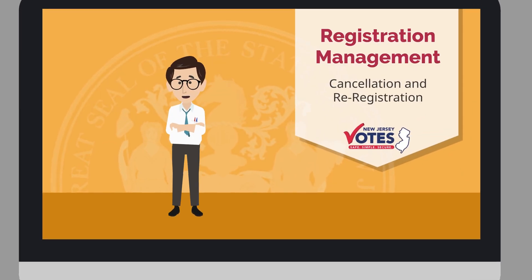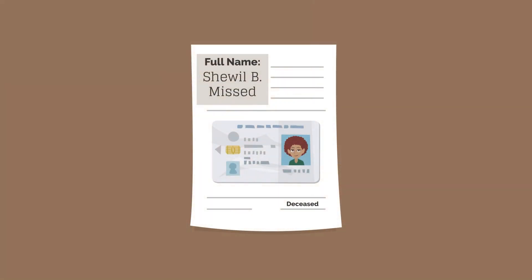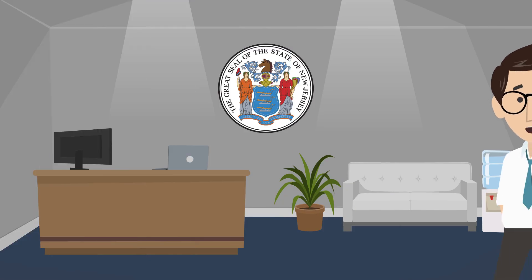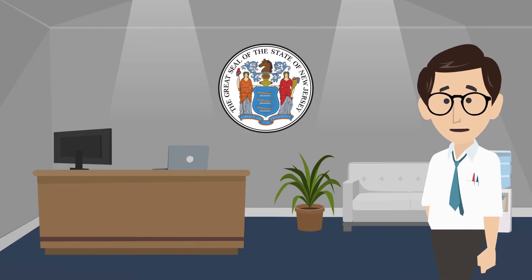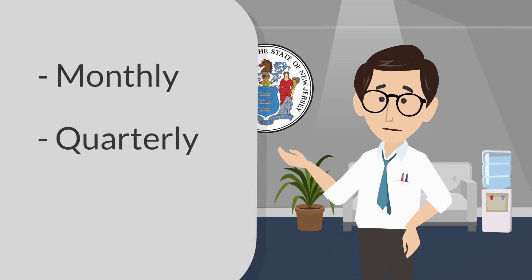Similar to our last episode on inactive voters, election offices have procedures in place with different state and local agencies that collect or process information on the deceased, like municipal government offices or the state registrar of vital statistics. These organizations produce a list of those individuals who have passed away over a period of time, and then provide that information to election officials on a regular basis — be it monthly, quarterly, or annually.